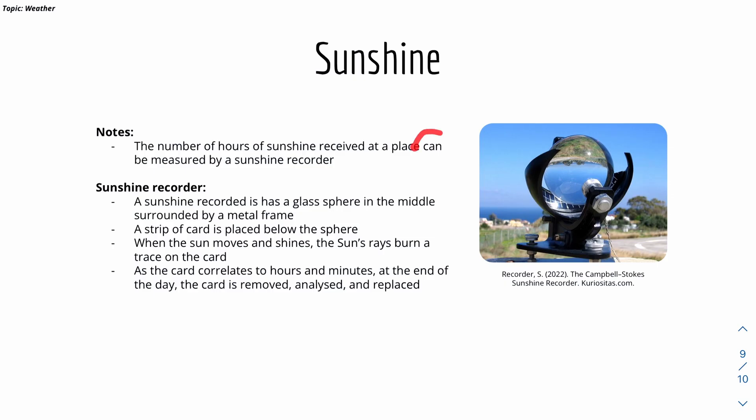What this means is that as the sun moves from here in the morning to at night, it will basically shine on the glass sphere, which will burn a specific time. For example, if it's, say, 10 a.m. over here.